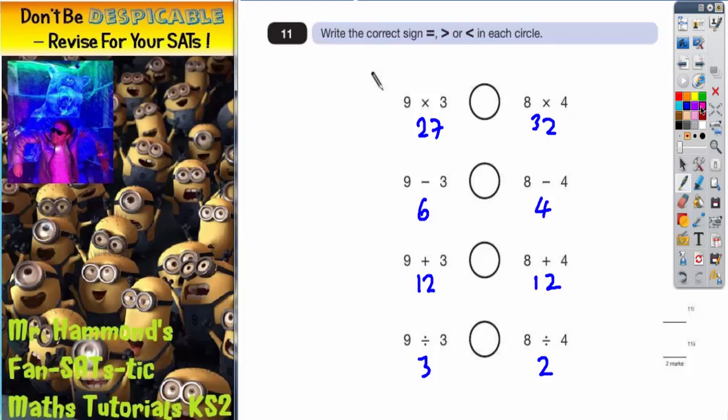OK, so if we compare 27 to 32, we can see that 32 is bigger. Now remember the crocodile, if you think about a crocodile, the crocodile's mouth always bites the bigger thing.